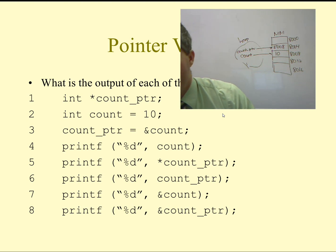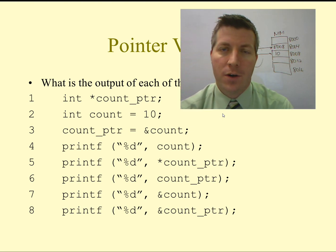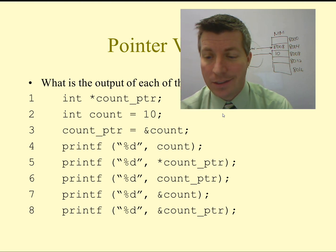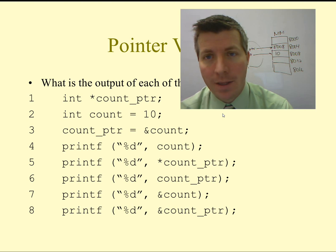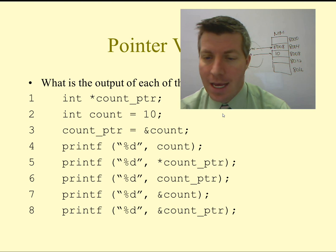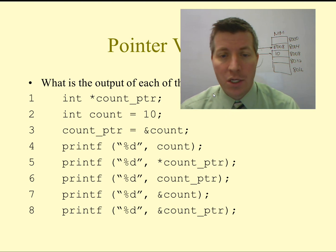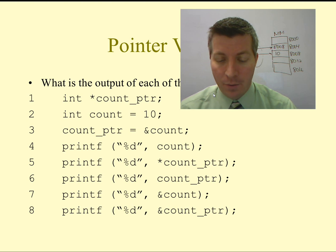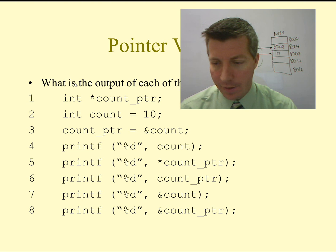The asterisk also has multiple uses. We use it to declare a pointer — as on line 1. And anywhere after that, when I use the asterisk on that variable, this is dereferencing the pointer. Dereferencing means that I go to the location stored inside the pointer — what the pointer is pointing at — and I get the value back out of it.